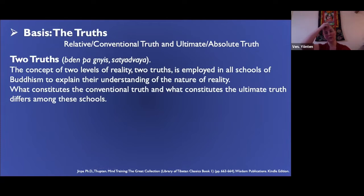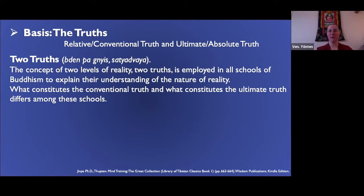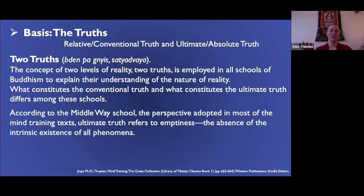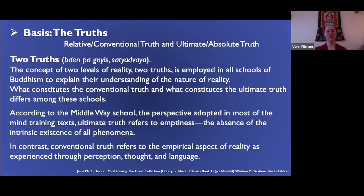Practices related to wisdom result in the dharmakayas, the wisdom bodies. The concepts of the two levels of reality — the two truths — are employed in all schools of Buddhism to explain the nature of reality. What constitutes conventional truth and ultimate truth may differ among philosophical tenets. According to our school, the Middle Way School, ultimate truth refers to emptiness — the absence of intrinsic existence of all phenomena.